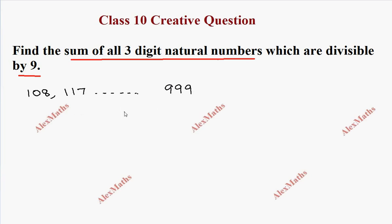So, the sum of the series is: 108 plus 117 plus dot dot dot, up to the last term. This is the series whose sum we want to find. We need to determine the n value.